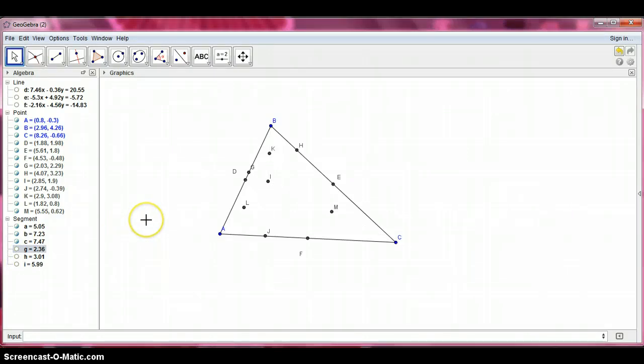So now we need to find the center of our nine point circle. In order to find the center, we need to construct the circumscribed circle for the triangle DEF. So let's construct the triangle D, E, and F.